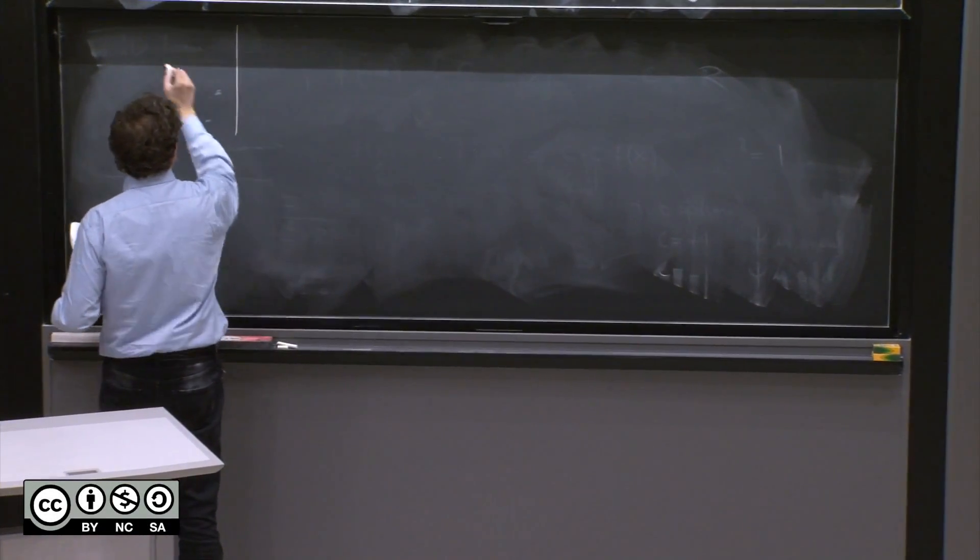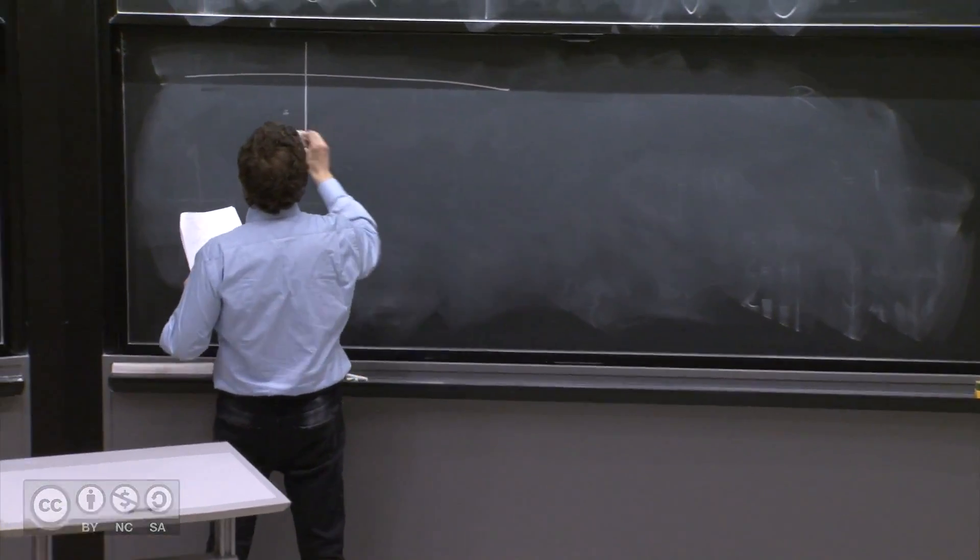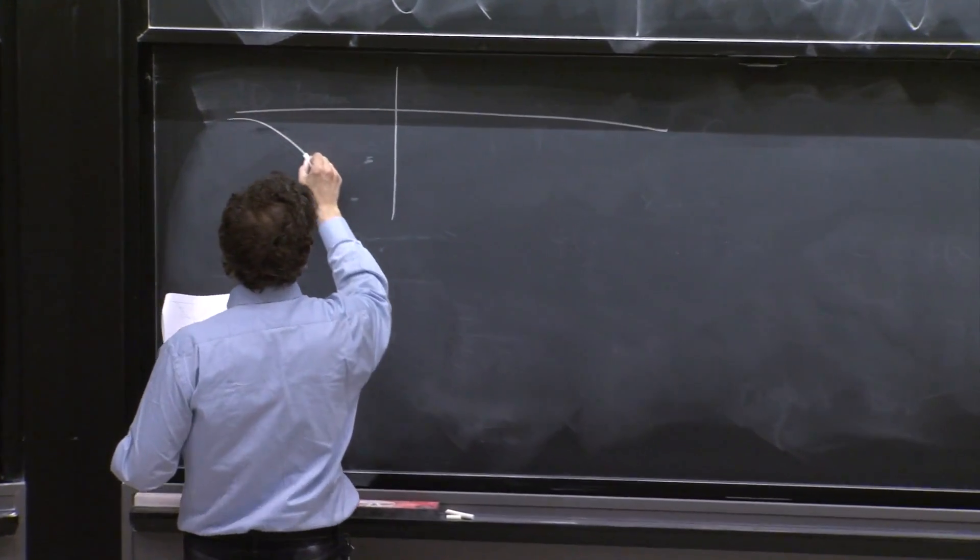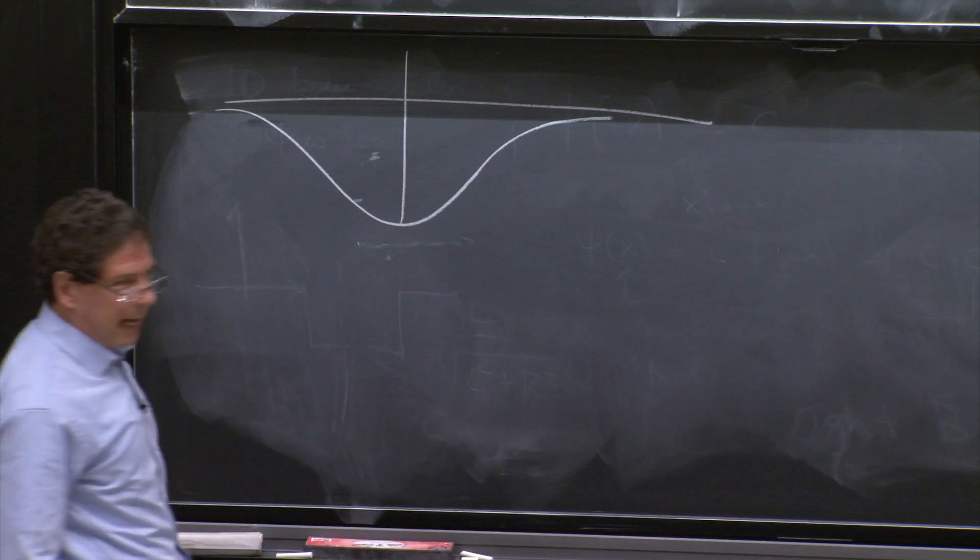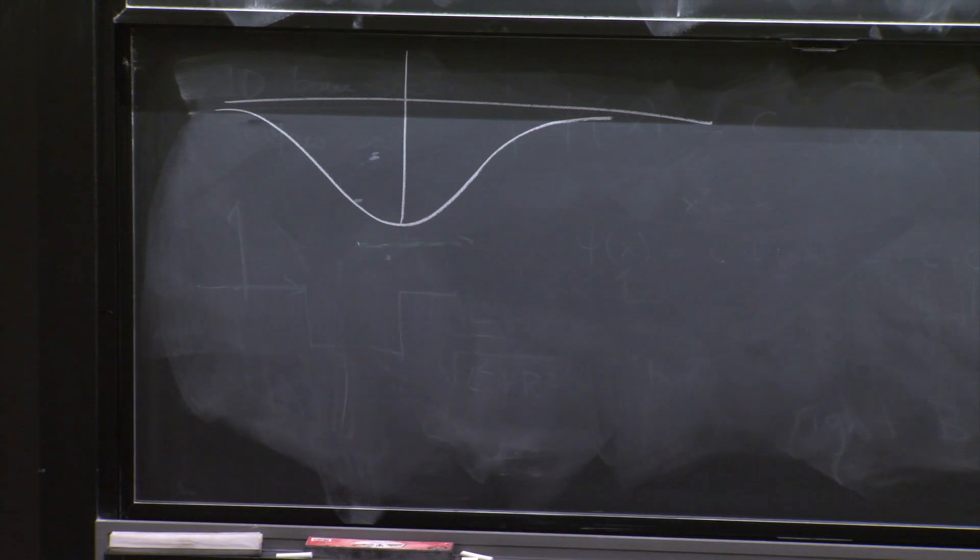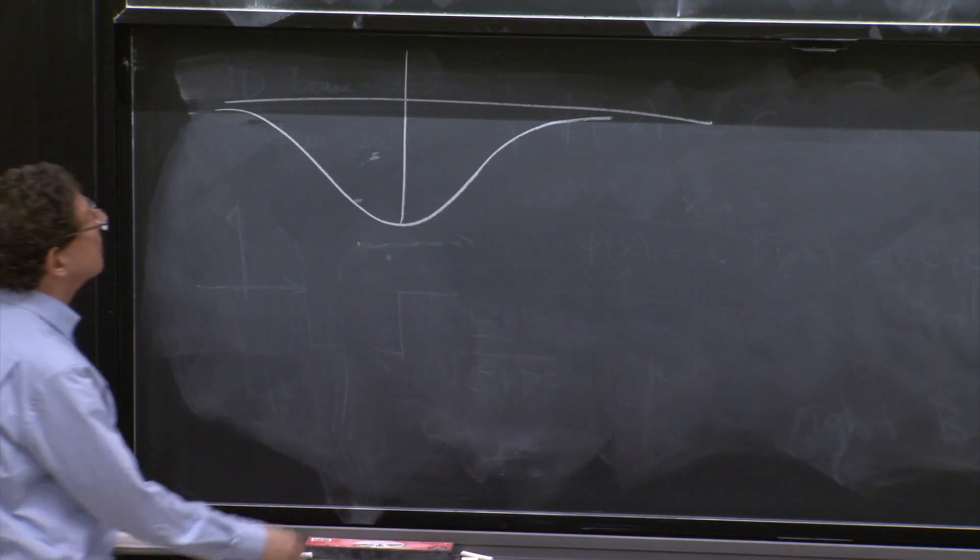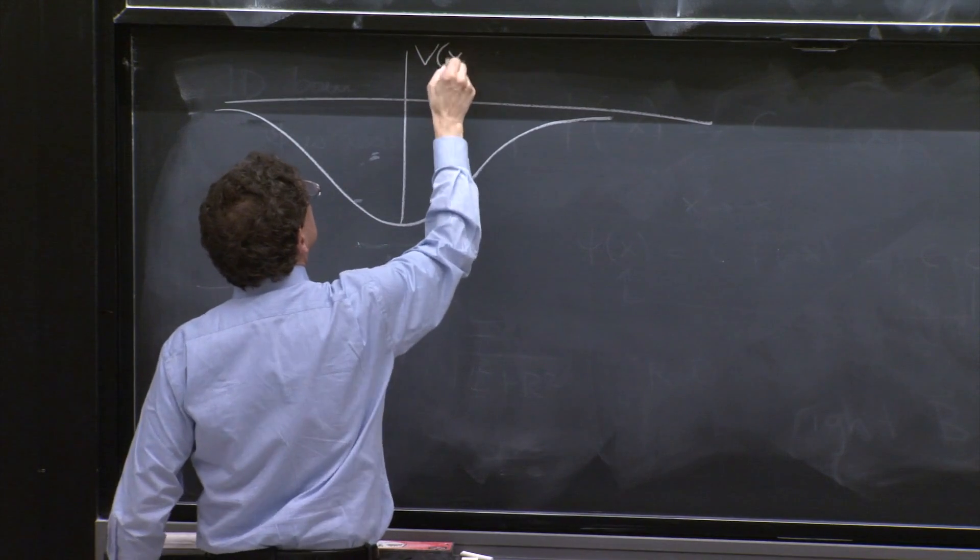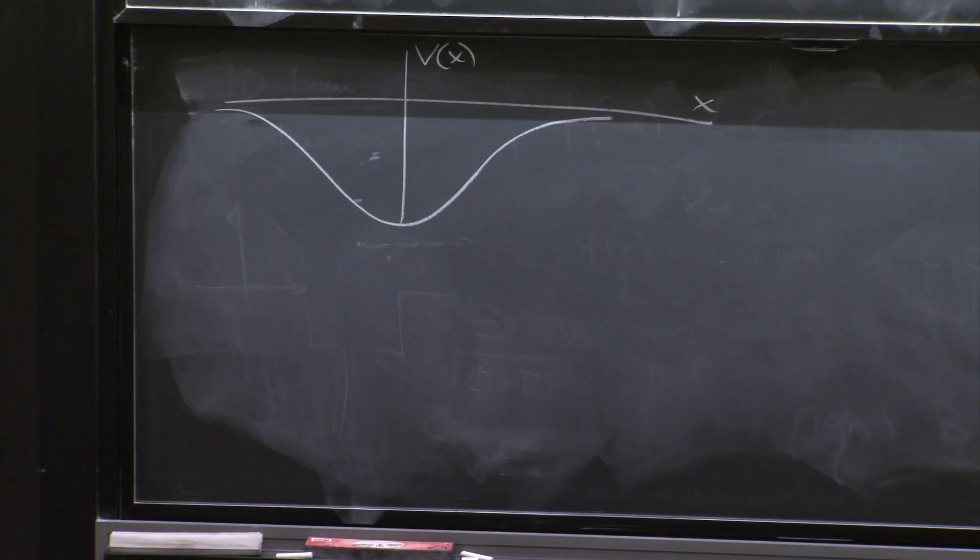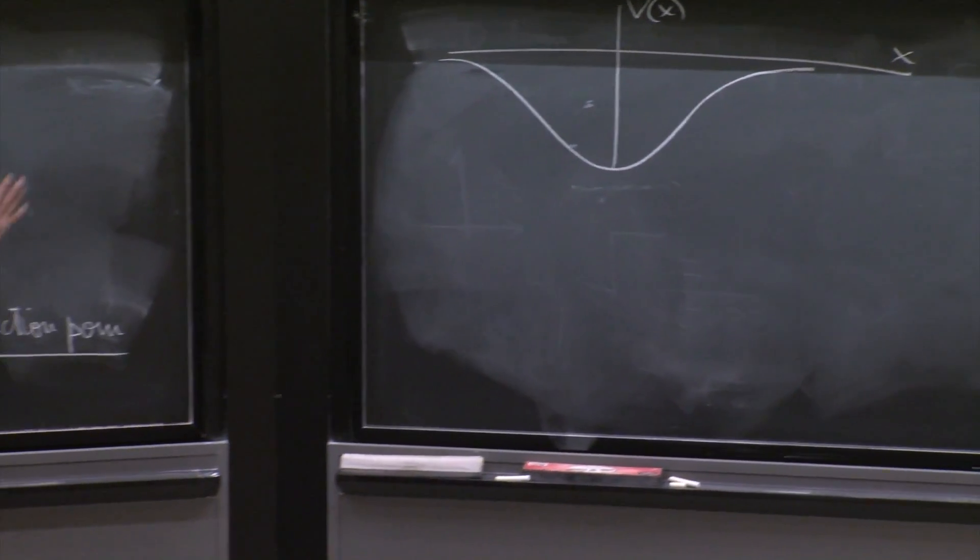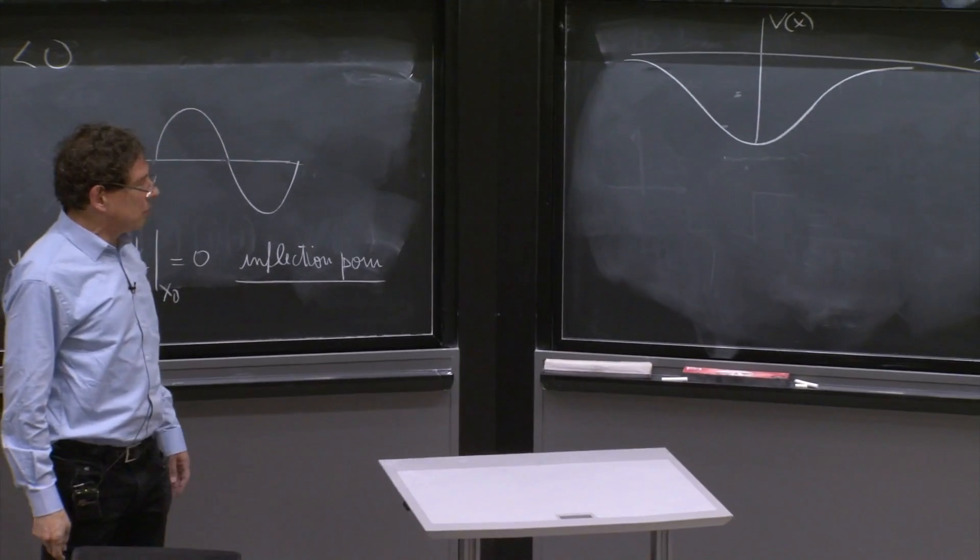Here is your potential. It's going to be a smooth, nice potential like that, V of x. Now, suppose you don't know anything about the energy eigenstates. This potential will be assumed to be symmetric.